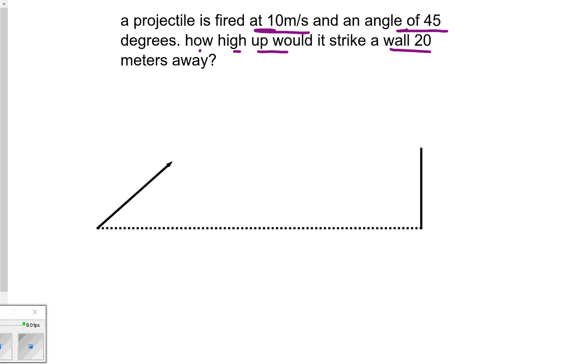This is a pretty good question. Let's go ahead and draw our projectile. Somebody has shot a projectile—I don't know what it is, a stone, a football, a bullet—but either way it's being shot at a wall. It tells us the wall is actually 20 meters away. That's good information to know.